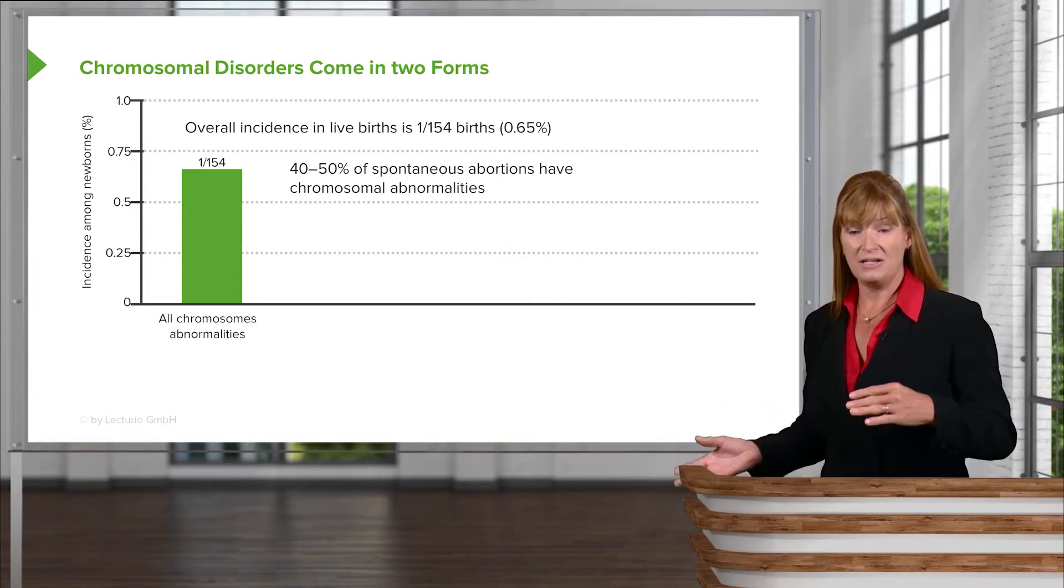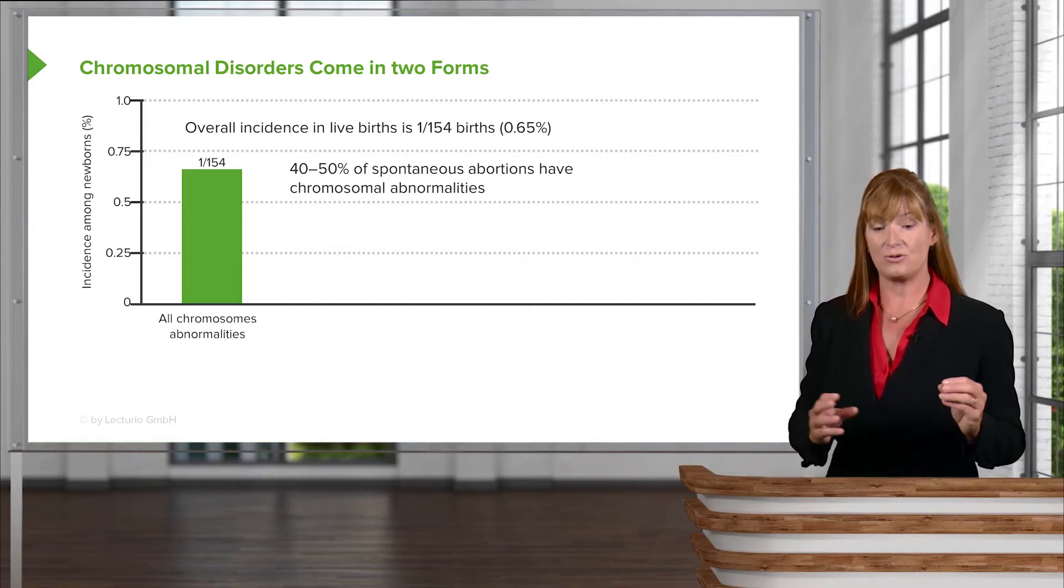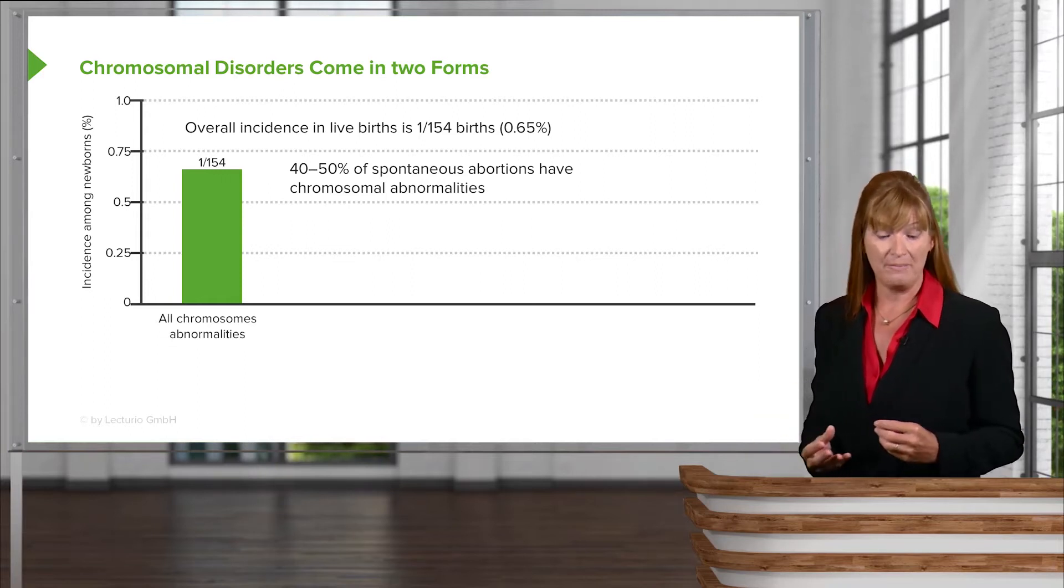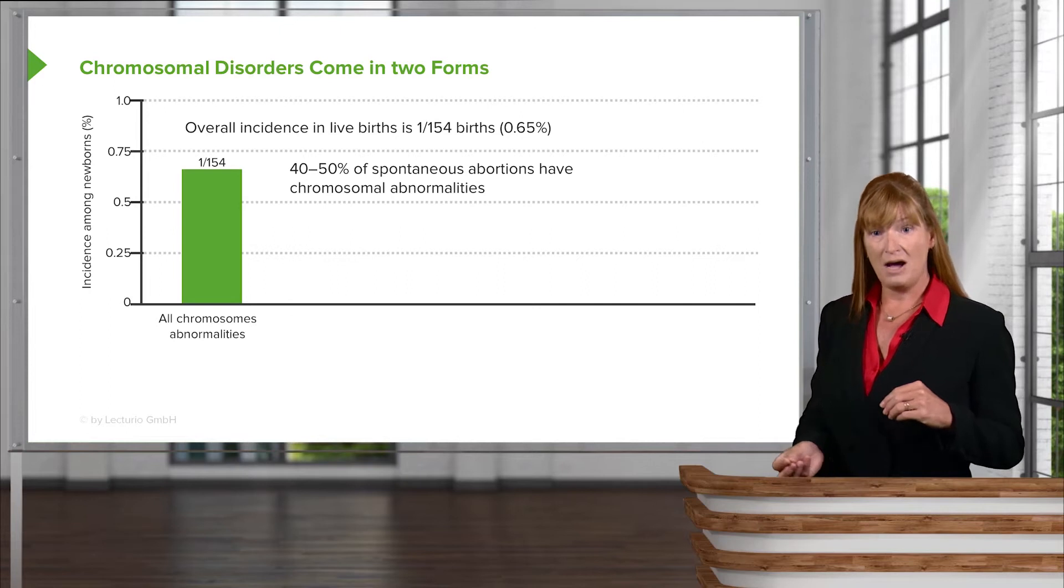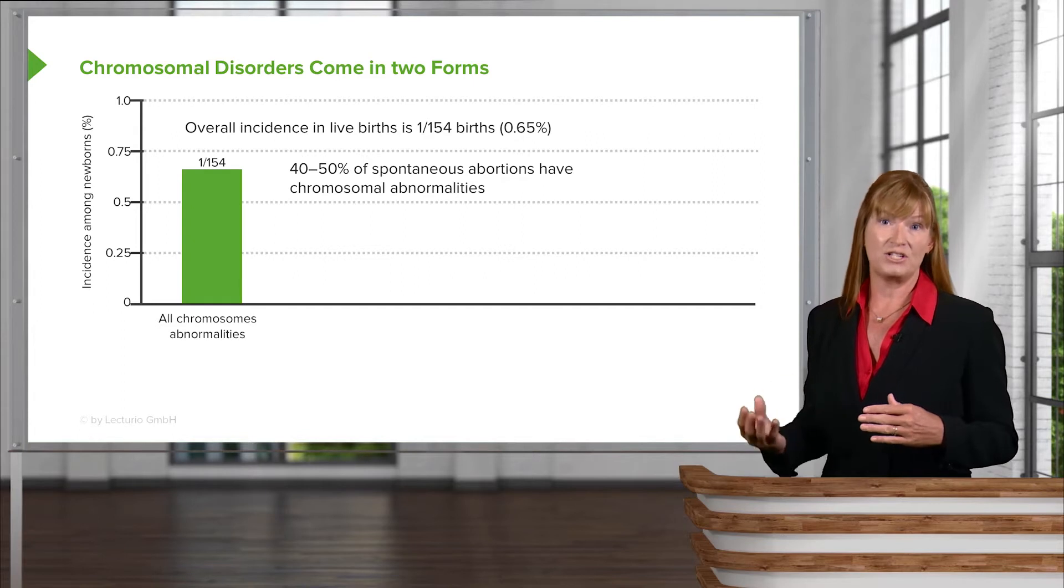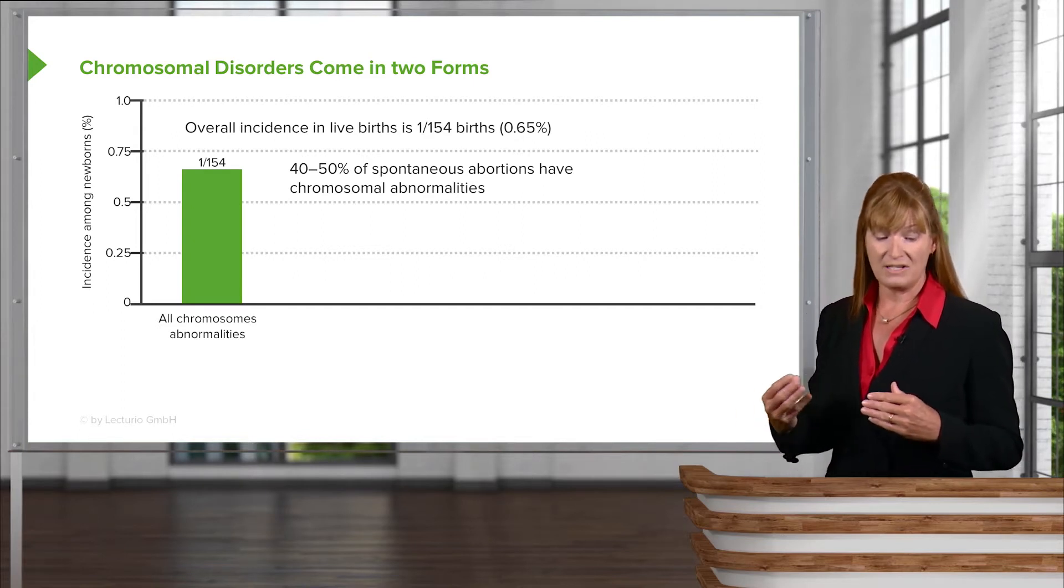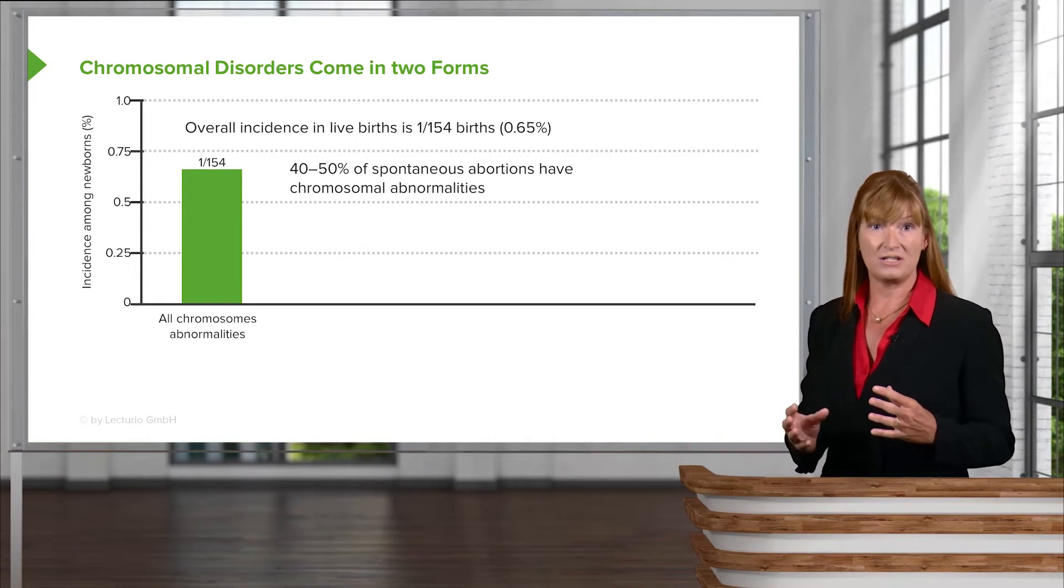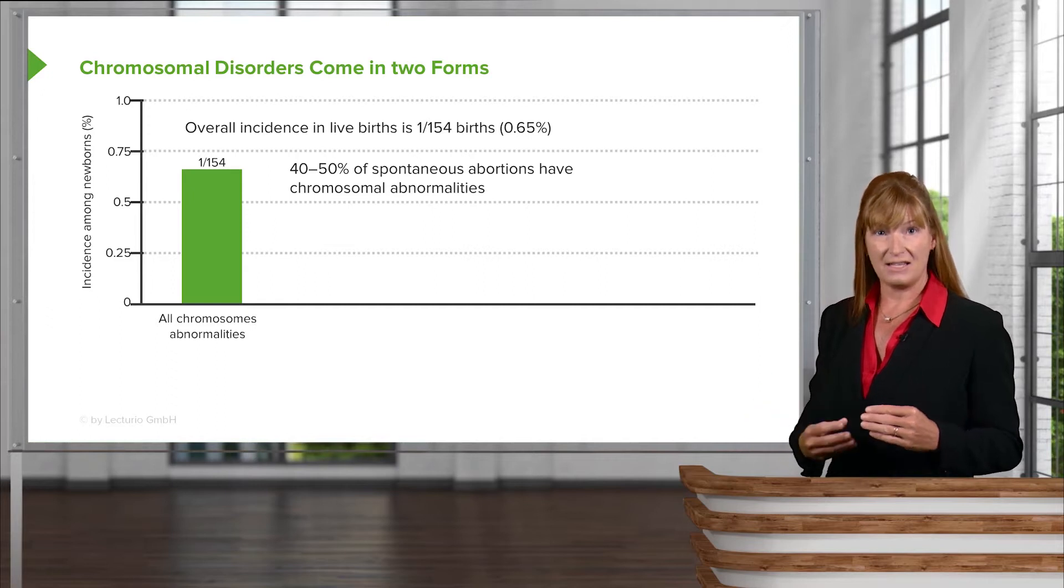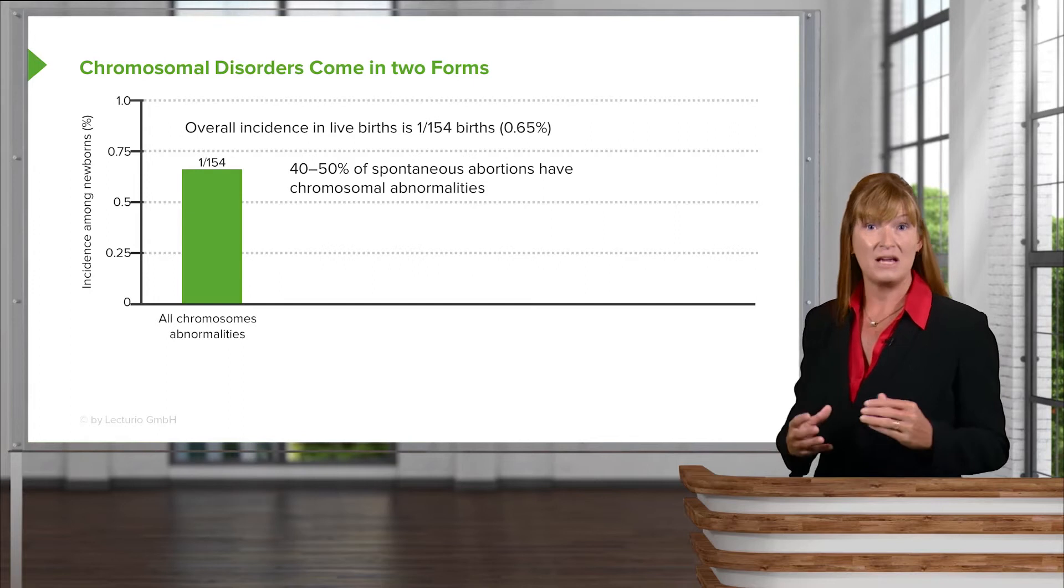Now keep in mind that 40 to 50% of chromosomal abnormalities result in spontaneous miscarriages. And that's because our body has a whole system of checks and balances to make sure that a developing embryo is in a healthy state before it goes on.